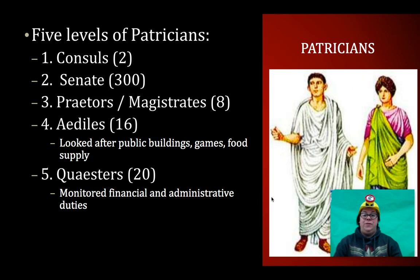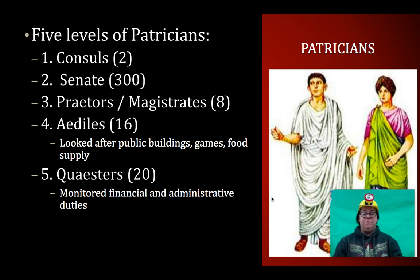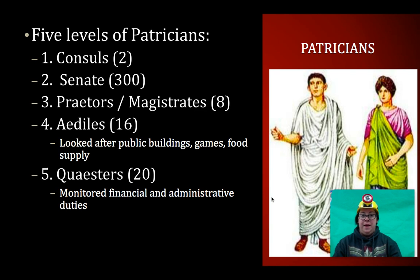So there were five levels of patricians. At the very top you had the consuls — there were two, much like the president and vice president in America. Then you had the senate, there were about 300 of them. The judges, or the praetors and magistrates — there were eight. The aediles looked after public buildings, public community offerings, games, the food supply, and the water supply — they were kind of like the public works people. And then the quaestors who monitored financial and administrative duties — they were in charge of money, how much was coming in, how much the city had, and whether people were getting paid.